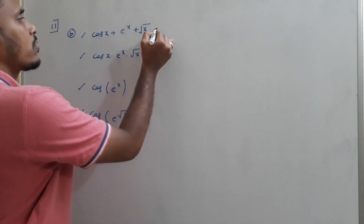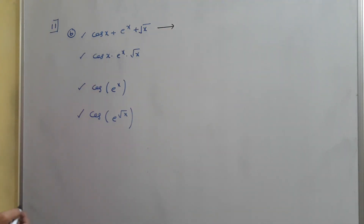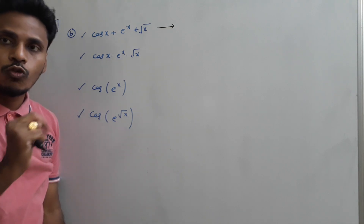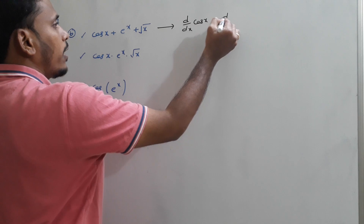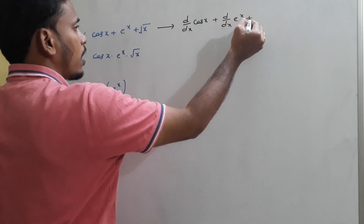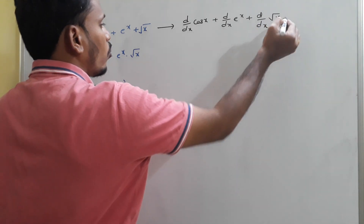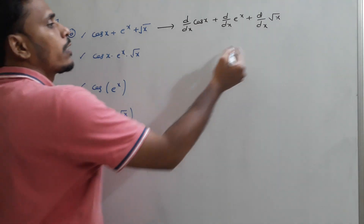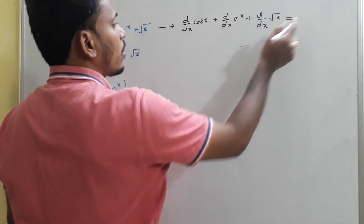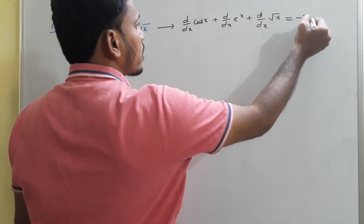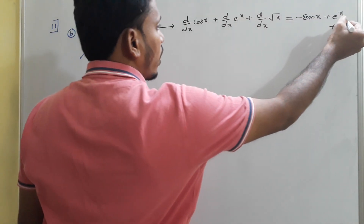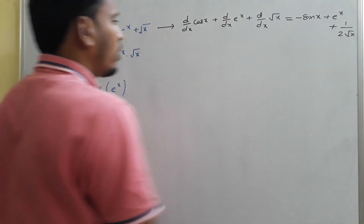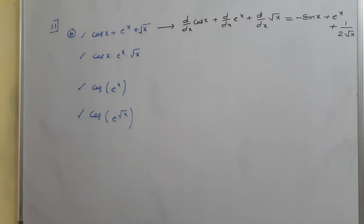For cos x + e^x + √x, apply the summation rule across all three terms: d/dx of cos x plus d/dx of e^x plus d/dx of √x. Derivatives are -sin x, e^x, and 1/(2√x) respectively, giving the final answer: -sin x + e^x + 1/(2√x).